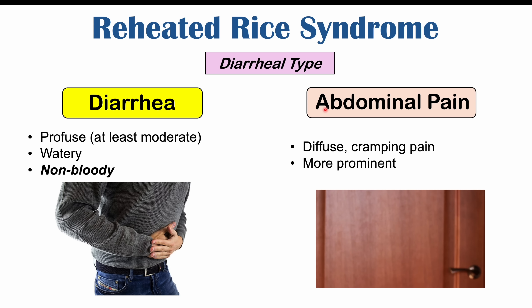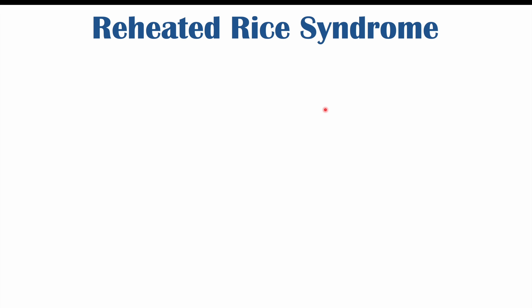An important point is that with the diarrheal type, this is less likely to occur with consumption of rice. Consumption of rice is more likely to lead to the emetic type. Consumption of other types of food that have been improperly handled — such as meats, vegetables, and different sauces — are more likely to lead to the diarrheal type. So eating rice is more likely to lead to the emetic type with that cerealide toxin, whereas the diarrheal type is more likely to occur from consuming other types of foods.